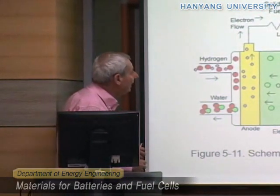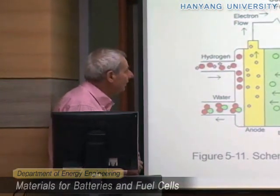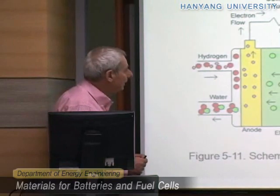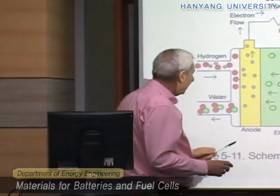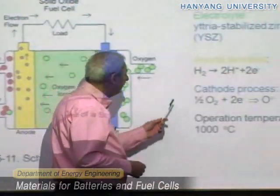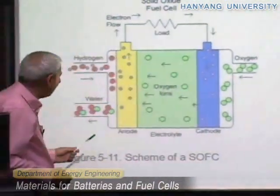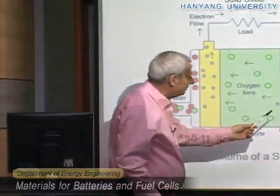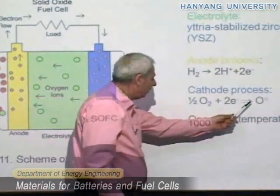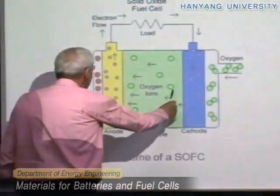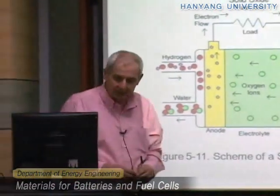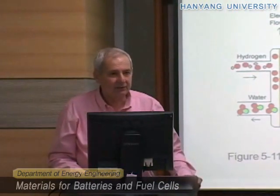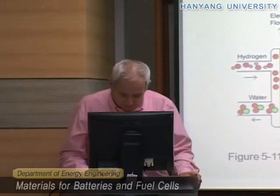The SOFC uses a solid electrolyte — yttria-stabilized zirconia — which we discussed previously. It is an oxygen-conducting electrolyte with O²⁻ ions. The anode process is the oxidation of hydrogen to form H⁺, while the cathode process is the reduction of oxygen to form O²⁻, and these O²⁻ arrive at the anode to form water. You may ask why we want a fuel cell operating at around 1000°C — of course not in a car, but there may be some applications.